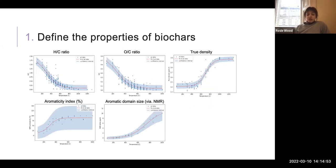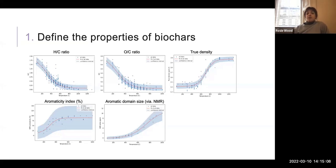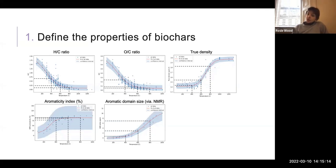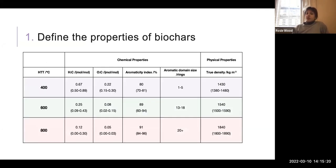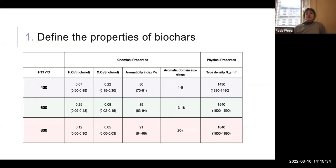The next thing I did was go through literature and collect data showing how each of these properties vary with highest treatment temperature. I fitted curves to each of my datasets and used these curves to calculate the average value each property would take at the three highest treatment temperatures — 400, 600 and 800 degrees C. As you go to a higher highest treatment temperature, you decrease H/C and O/C ratios, increase your aromaticity indices and aromatic domain sizes, and increase your true density.